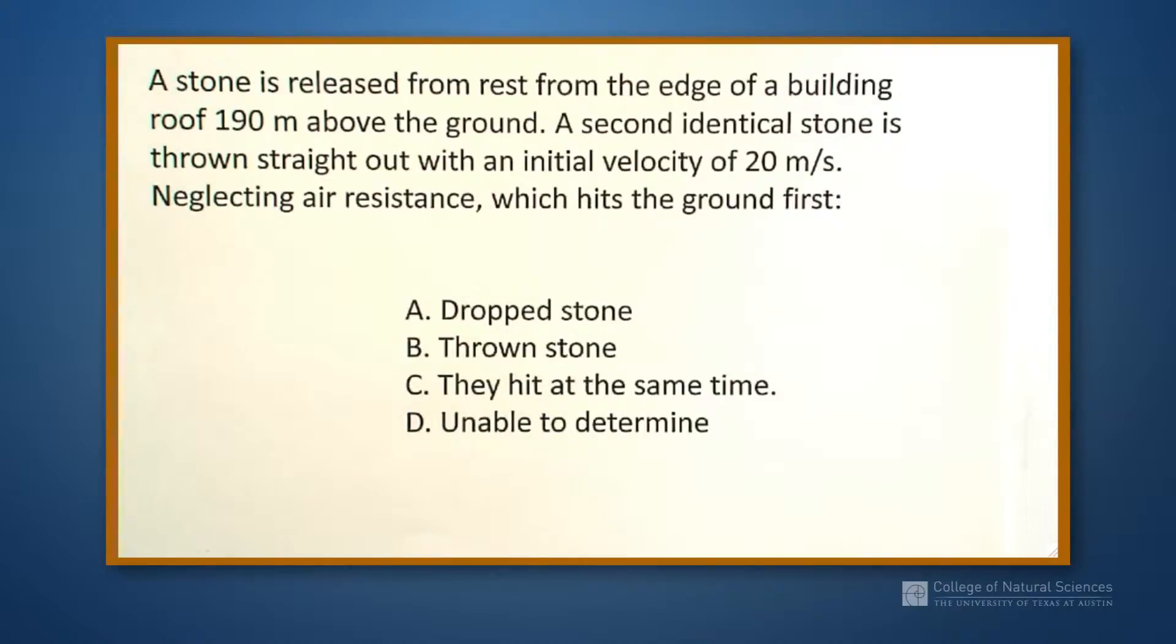So we're on a really tall building. A second identical stone is thrown straight out with an initial velocity of 20 meters per second, neglecting air resistance, which one hits the ground first.